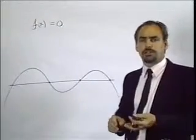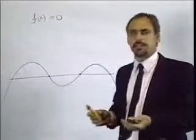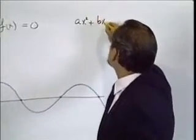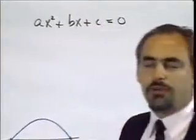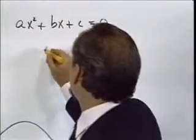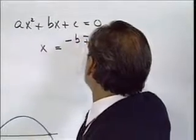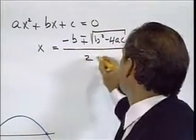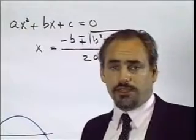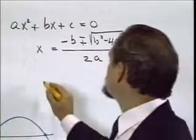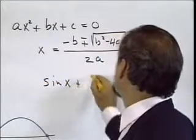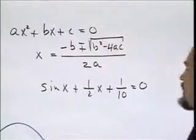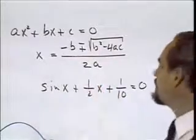Solving equations is something that everyone studies in school. More specifically, what they study is the solution of the quadratic equation: ax squared plus bx plus c equals zero. And everyone knows the famous quadratic formula: x is equal to minus b plus or minus the square root of b squared minus 4ac over 2a. You might think that if you want to solve some other equation, such as sine of x plus one-half x plus one-tenth is equal to zero, that what you need is to develop an analogous formula appropriate to this equation.